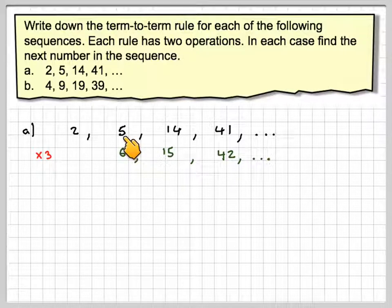Right, now if I take 1 from the 6, that will actually give me the 5, which is the term of the sequence. If I take 1 from 15, that will give me 14. If I take 1 from 42, that will give me 41.